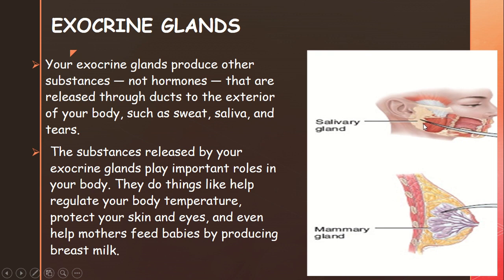Examples of exocrine glands include salivary glands and mammary glands. If you look at the diagram, you can see the duct — a tube through which substances are released. This is the main difference: exocrine glands release their substances through a duct. The substances released by exocrine glands play important roles in your body.